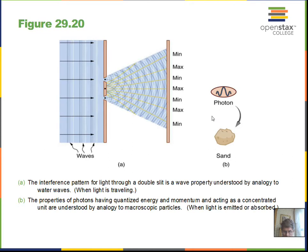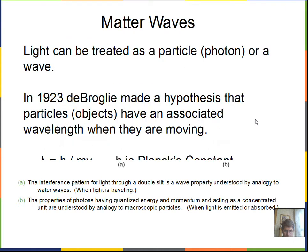So this is sometimes called the particle wave duality. In some cases, when light is traveling, it's best to use the wave model. In other cases, when light is emitted or absorbed, it's best to use the quote unquote particle model, the photon model.